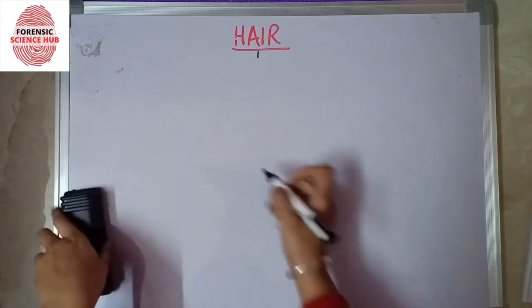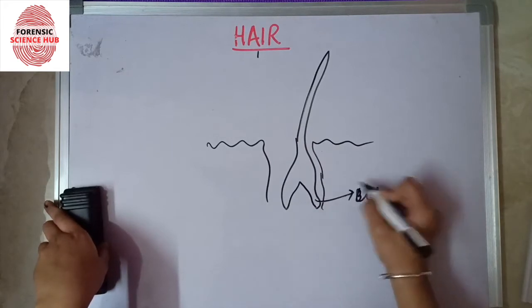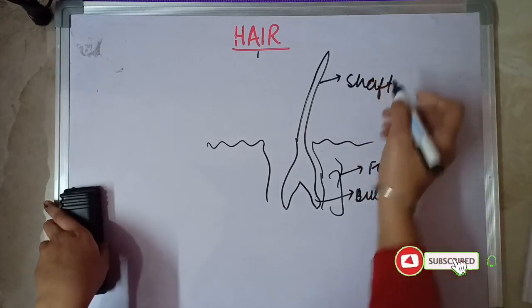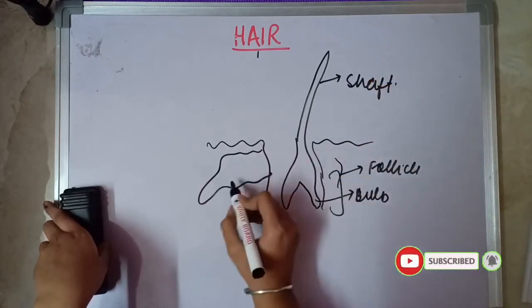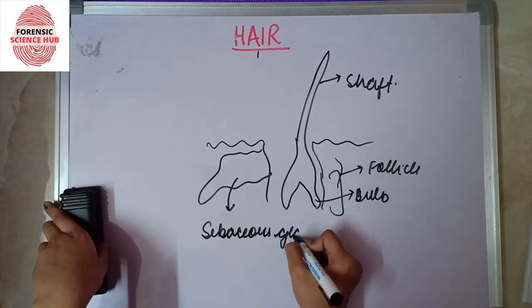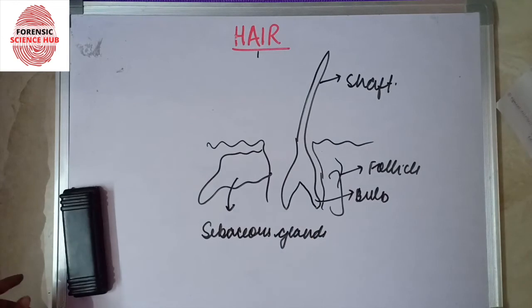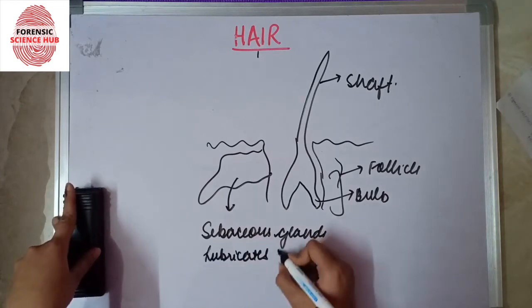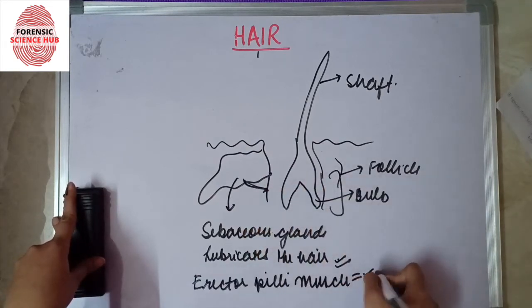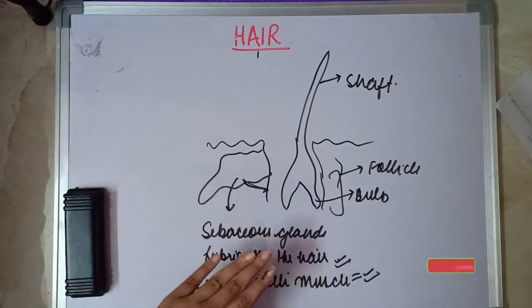Now drawing the overall structure: this is the bulb portion, this is the follicle, and this is the shaft. Other than these, we also have certain glandular portions known as sebaceous glands, which are the oil glands — they lubricate the hair.